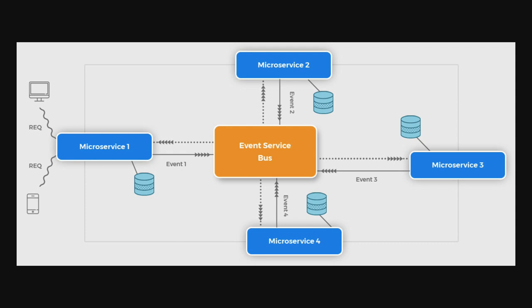What the event bus does is: you publish or push an event to the event bus, and there will be a subscriber. In this case, microservice one doesn't need to be aware about microservice two, three, or four. Any microservice can publish an event, and any microservice registered as a subscriber of that event bus will be able to listen to those particular events.